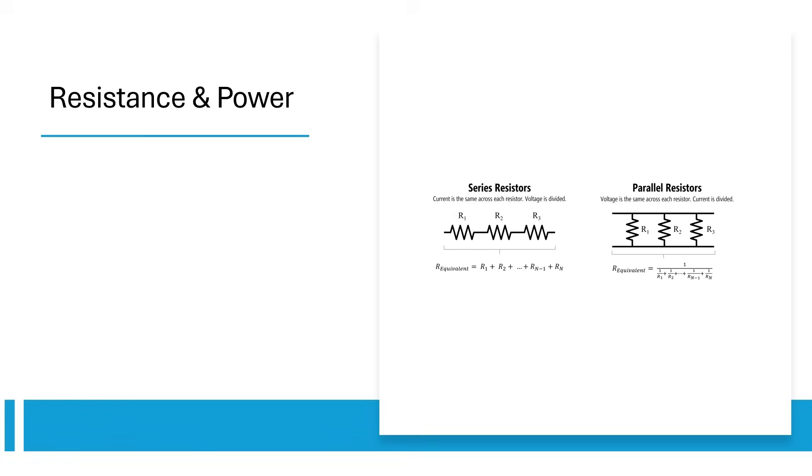Just like springs and capacitors, resistors can be placed in parallel and series. Resistors in series create a total resistance equal to the sum of the individual resistances, and resistors in parallel follow the same inverse rule we saw for capacitors and springs in series.